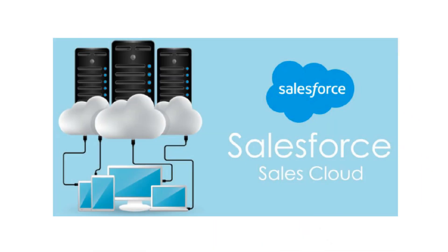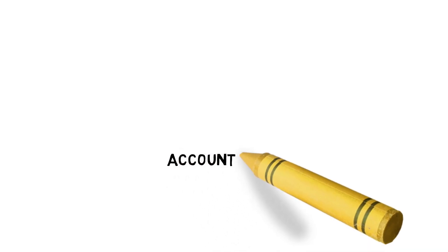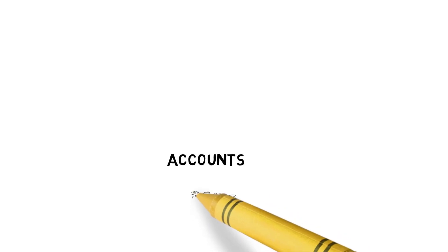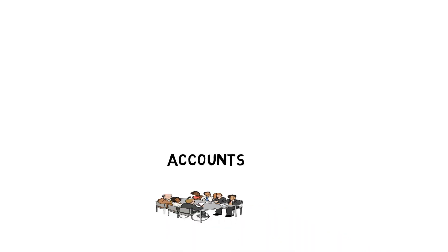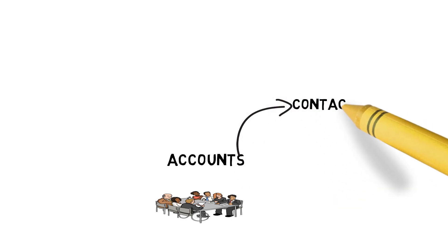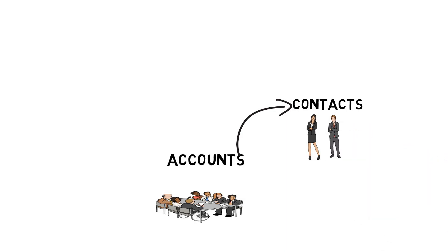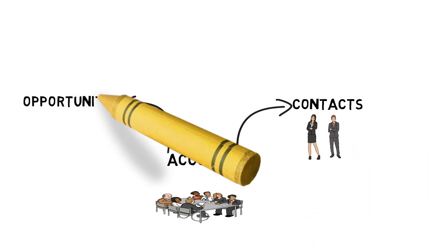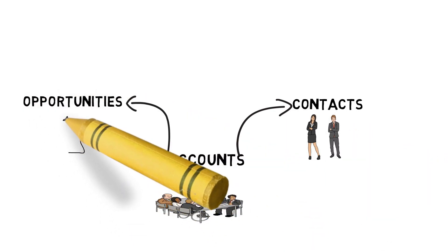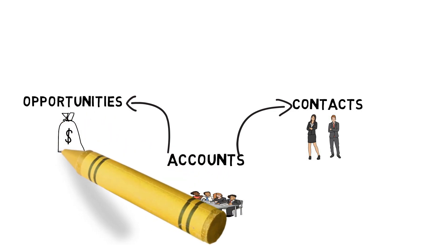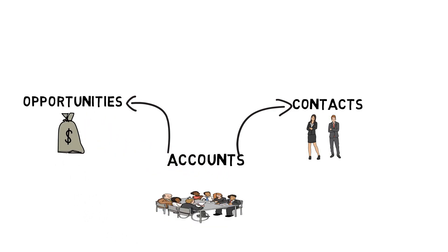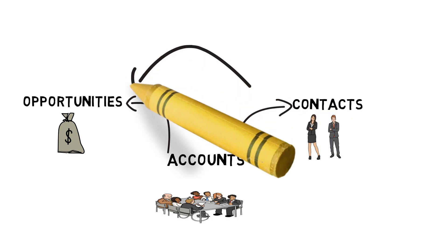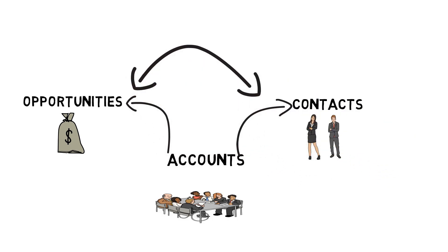First are accounts. Accounts are organizations — typically customers and prospects, but they can also be suppliers and consultants. Accounts have contacts; contacts are the people that work at those accounts. Accounts also have opportunities. Opportunities are sales deals. One account can have one or many opportunities, and we can maintain relationships between contacts and specific opportunities.